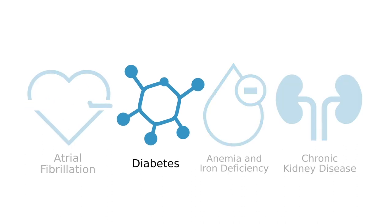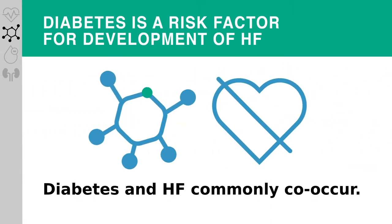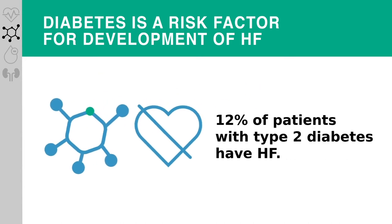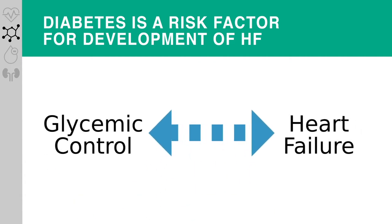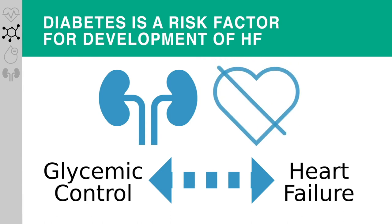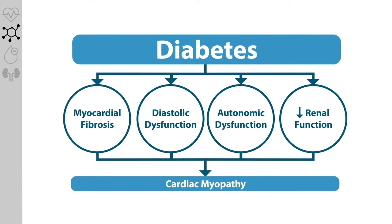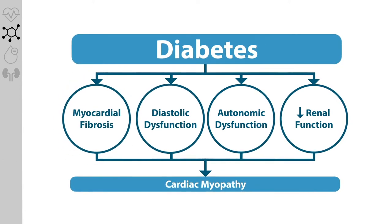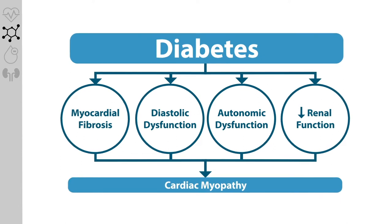Diabetes is one of the most common comorbidities in patients with heart failure. Diabetes and heart failure commonly co-occur, with an estimated 12 percent of patients with type 2 diabetes having heart failure. Although diabetes is an established risk factor for the development of heart failure, the relationship between glycemic control and heart failure is complicated by the long-term effects of diabetes on other organ systems. Diabetes can produce heart failure independently of coronary artery disease by causing myocardial fibrosis, diastolic and autonomic dysfunction, and reduced renal and endothelial function, all of which contribute to diabetic cardiomyopathy.